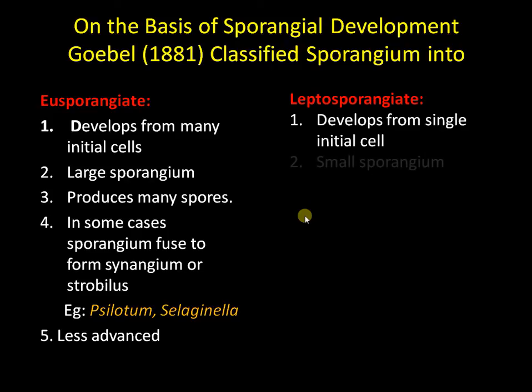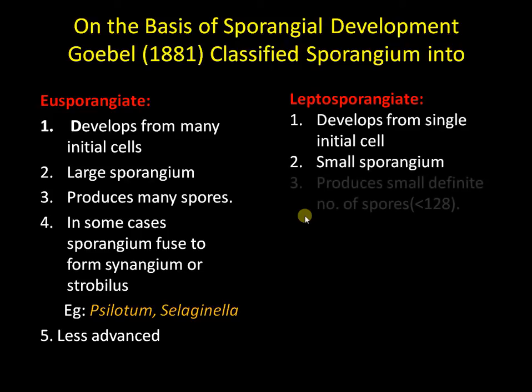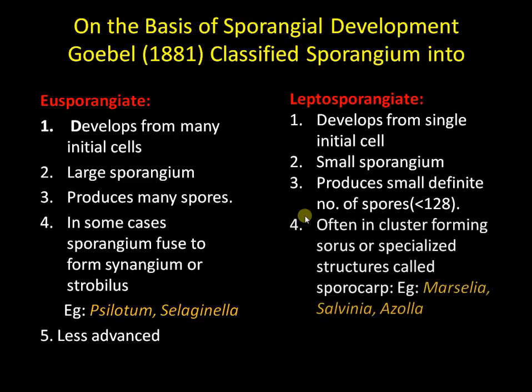In the leptosporangiate condition, the sporangium develops from a single initial cell, forming a small sporangium with fewer spores — often a definite number, less than 128. These sporangia are further grouped together to form sori or specialized structures like sporocarps. Examples include Marsilea, Salvinia, and Azolla — all higher, more advanced ferns. This type of sporangial development is characteristic of advanced ferns.